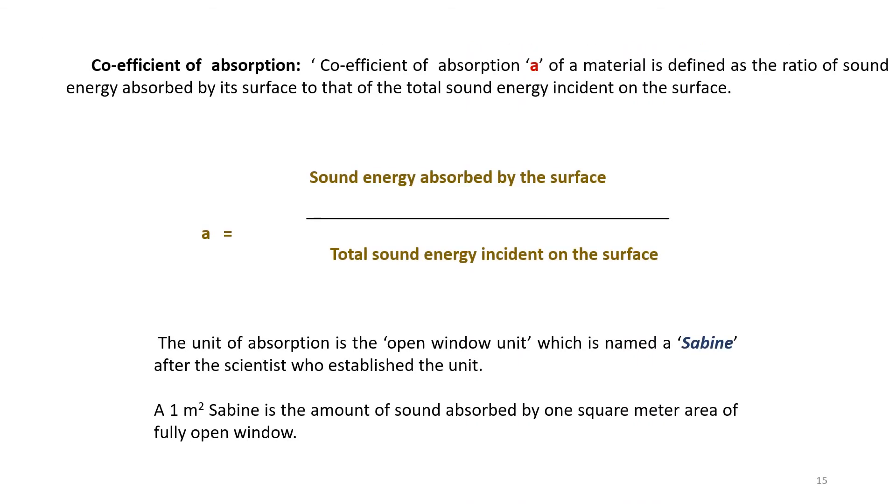To calculate reverberation time of any hall, one entity that we should know is the coefficient of absorption, denoted by the small letter a. It is the effectiveness of a surface in absorbing sound energy. The formula is sound energy absorbed by the surface divided by total sound energy incident on the surface. The unit is open window unit or Sabine, named after the scientist.